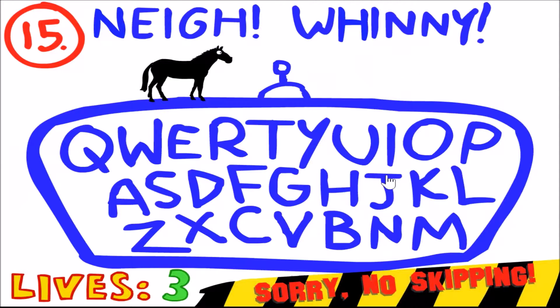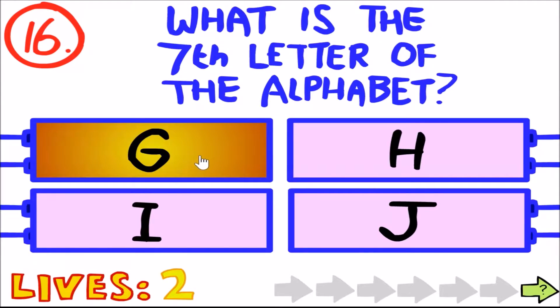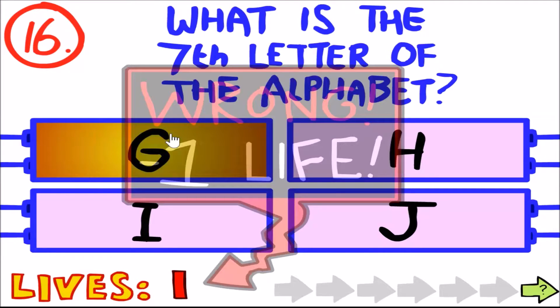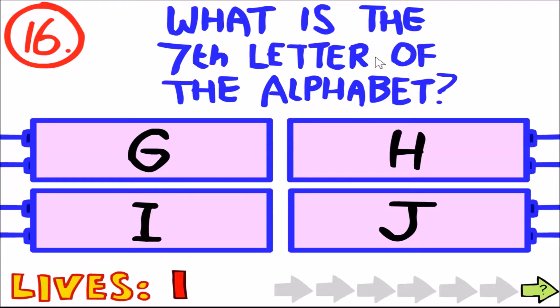Neigh. Winnie. What? Neigh, Winnie. Oh, horse. Oh, horse. What is the seventh letter of the alphabet? A, B, C, D, E, F, G. All right, yeah, of course. What is the seventh letter of the alphabet? Oh, one, two, three, four, five, six, H.